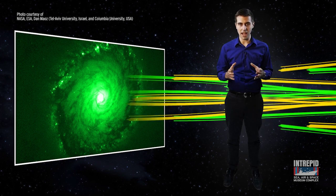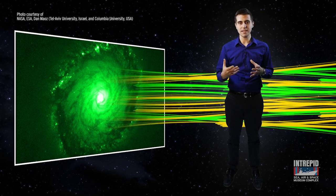Next, astronomers collected wavelengths of visible light, which they colored in greens and yellows.